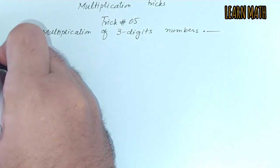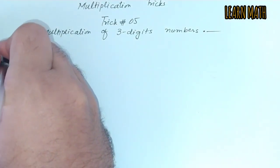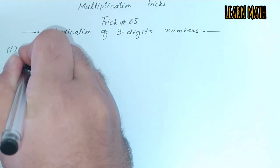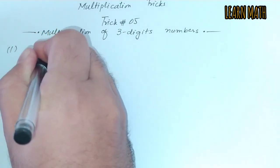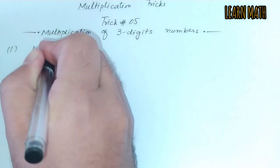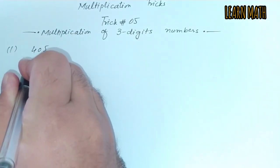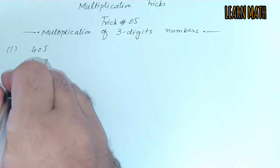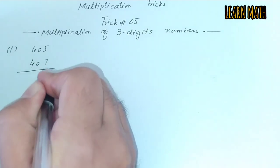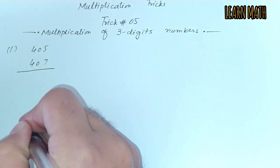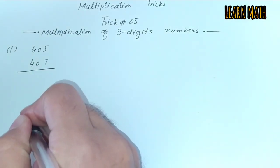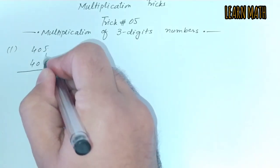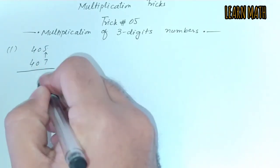Suppose we have two numbers having three digits. The first example is 405 and 407. The trick is very simple: first we will multiply 7 into 5, and that is 35.